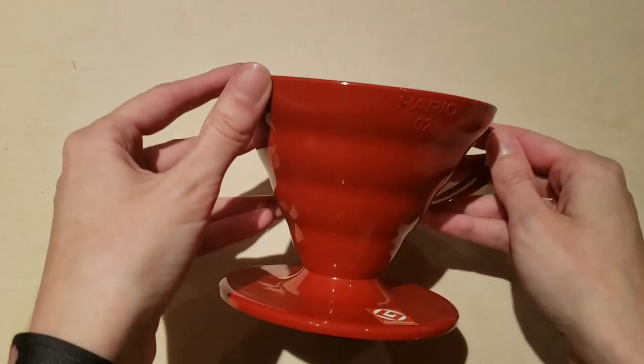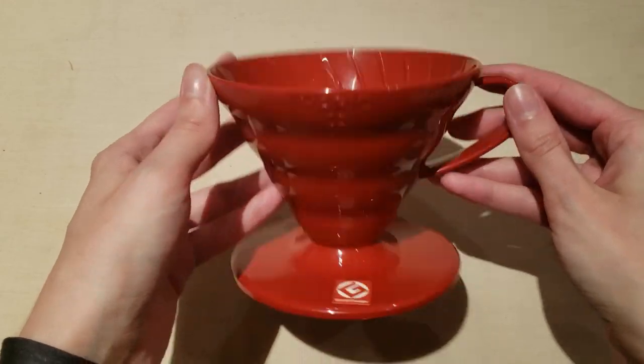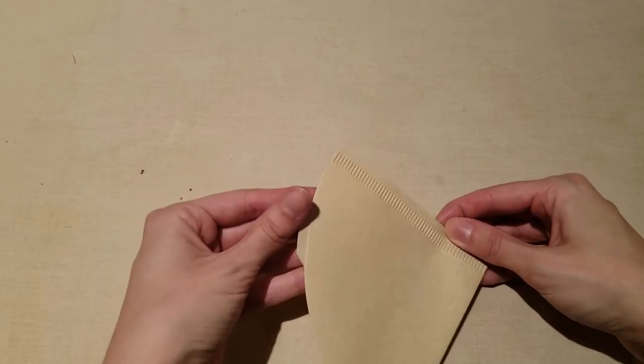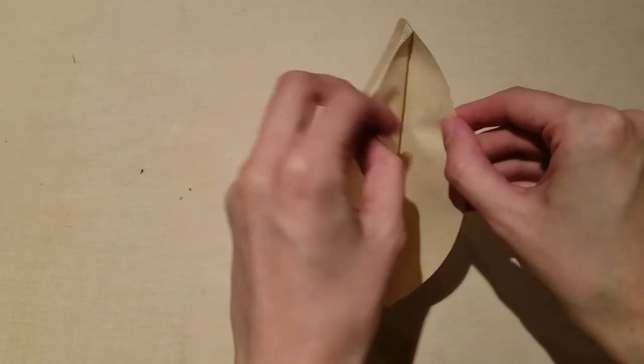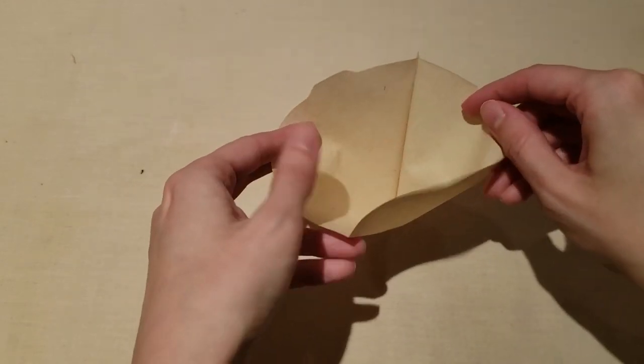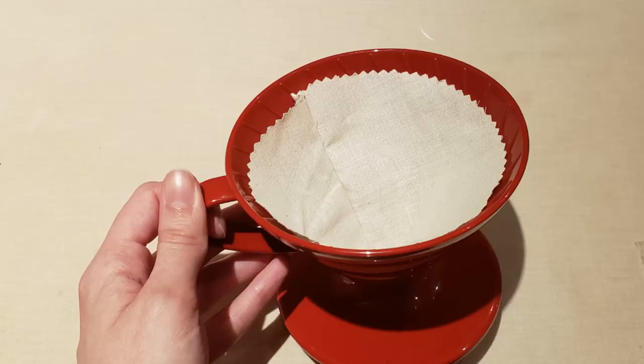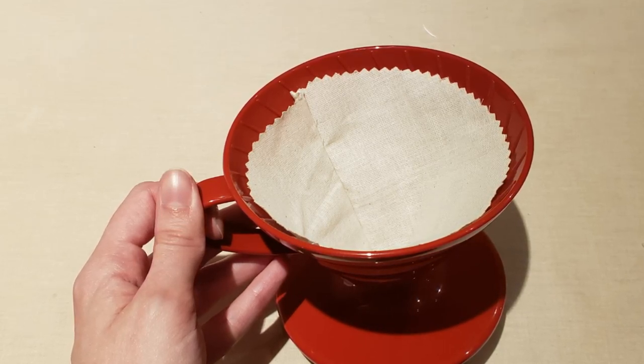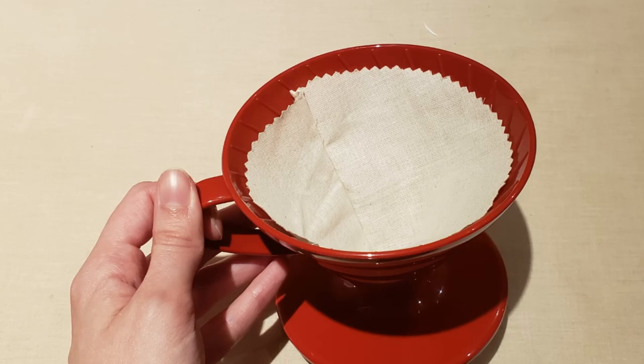I use a Hario V60 coffee dripper cone for my pour-over coffee, and the paper filter's shape for this setup is a simple cone-shaped folded flat. There is a fold of the paper on one side and a stamped seam edge on the other. This tutorial will specifically recreate a coffee filter for a Hario V60, but you can adjust it for the shape of the coffee filter that you use.